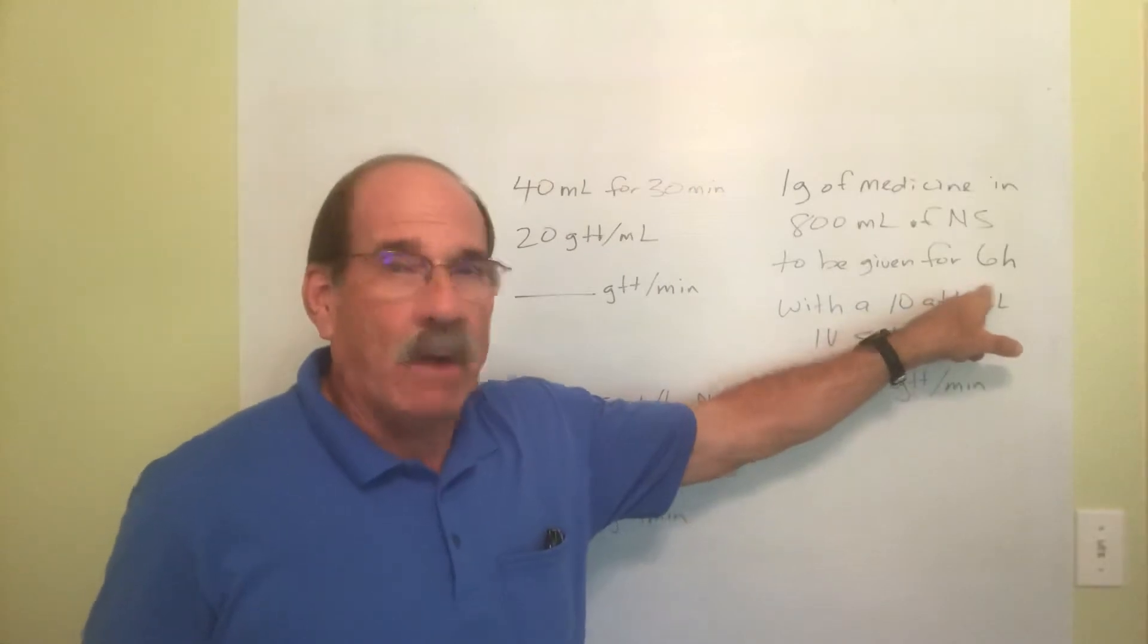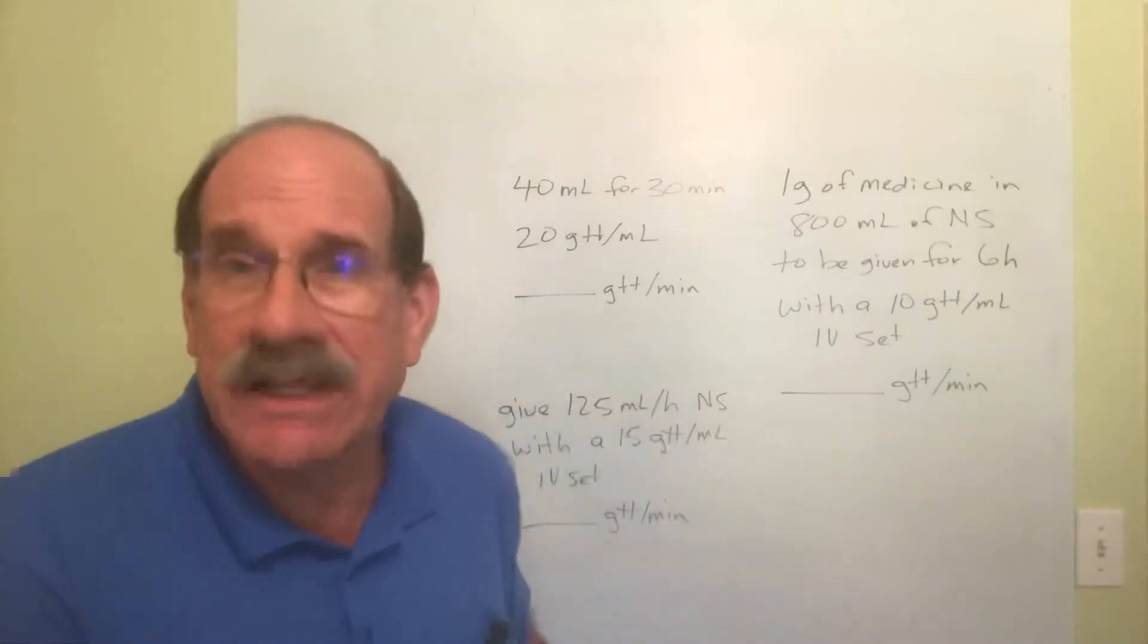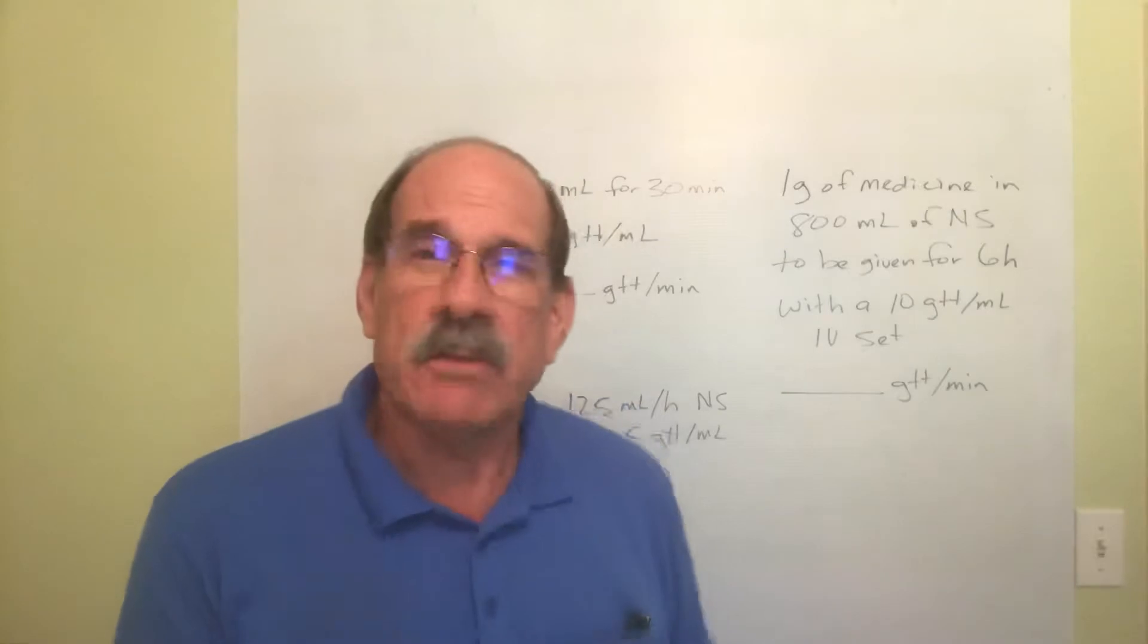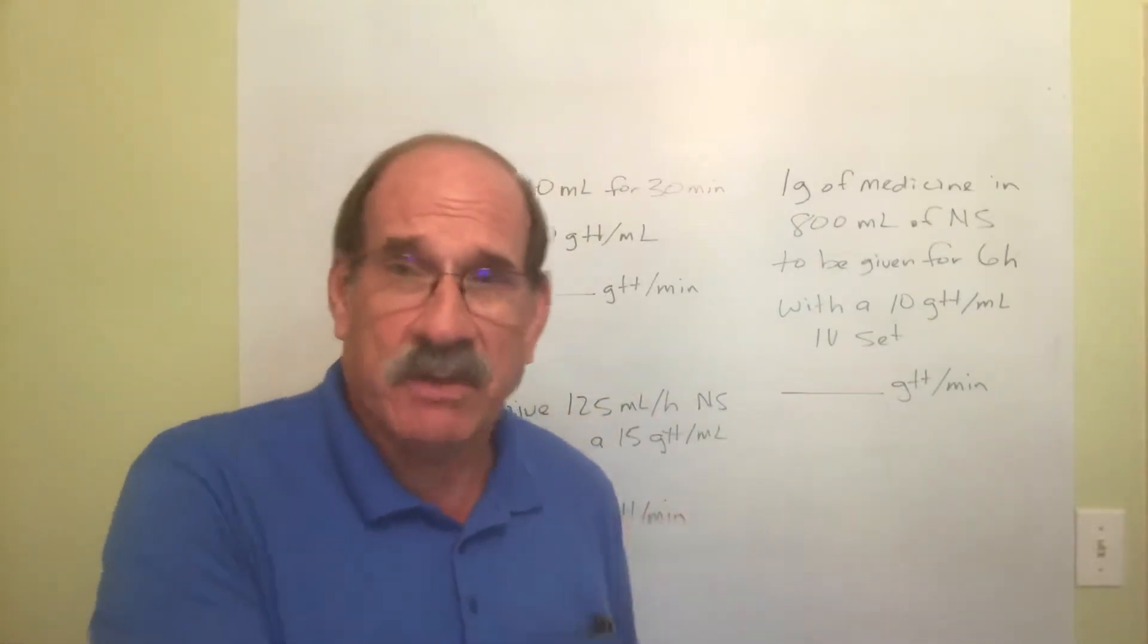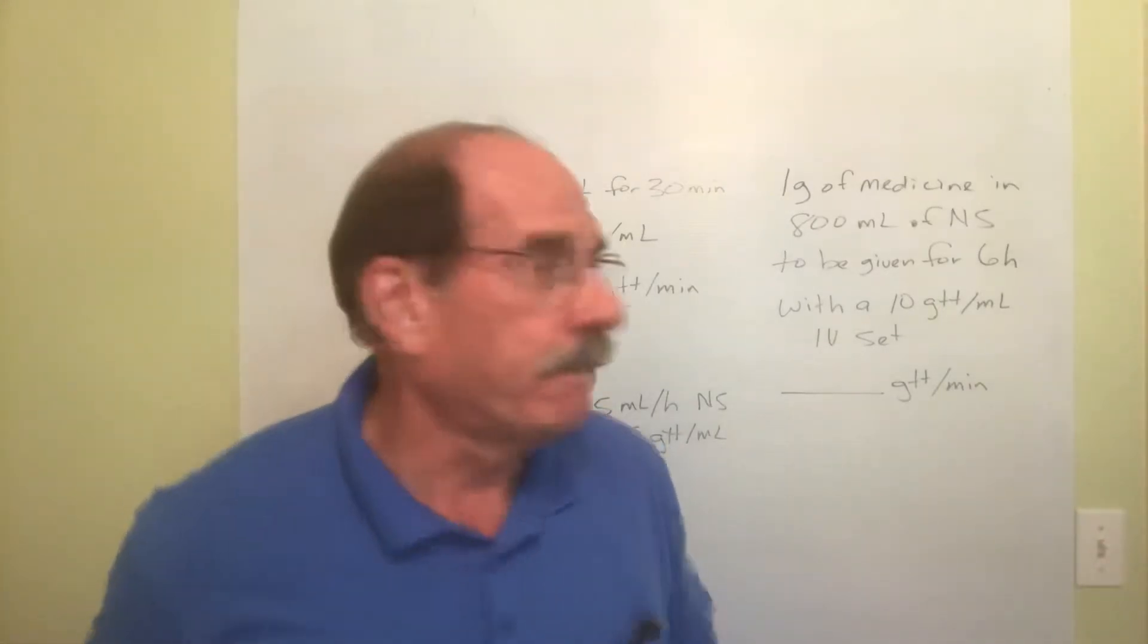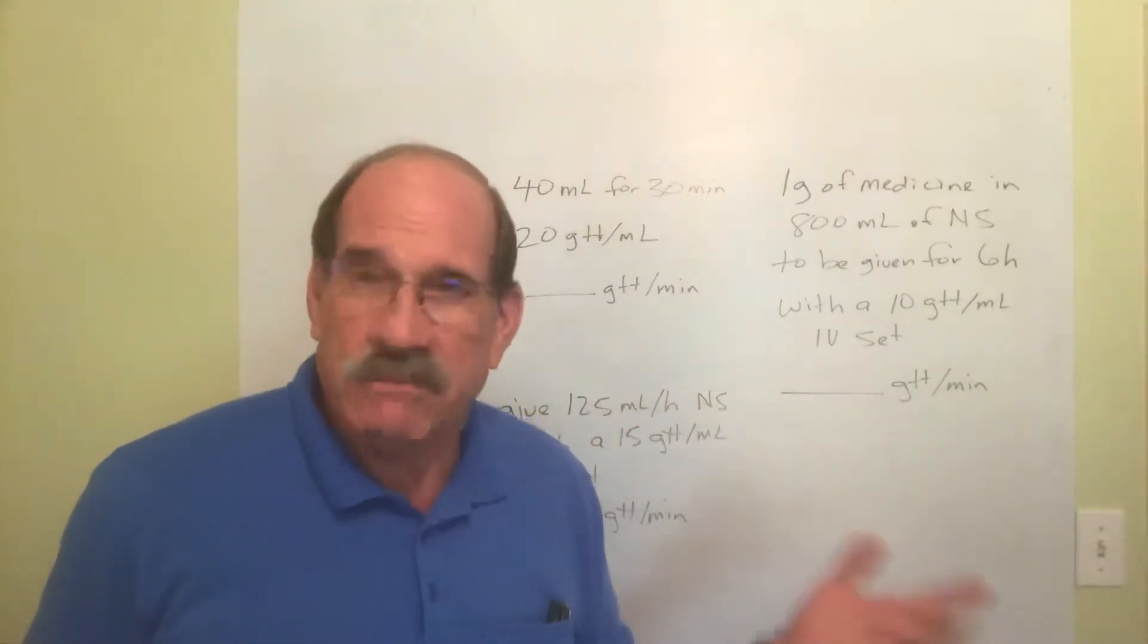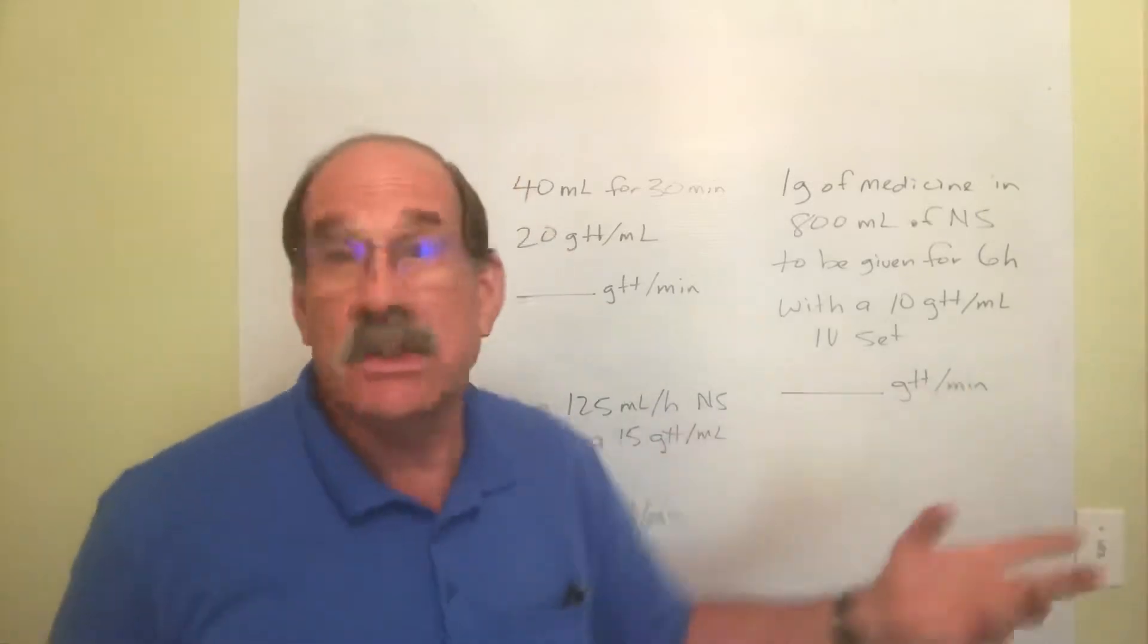Now you'll notice I didn't put the formula V over T times C, but you've got that in your notes. You've been doing three or four of these already. If you haven't watched the previous videos, don't do this one yet. That's like going from first grade and skipping to fifth grade. Go back and watch the other ones. You have that formula in your notes: V over T times C equals R.